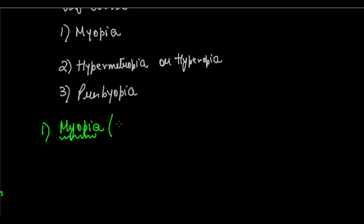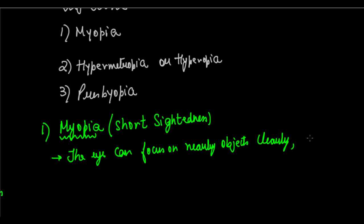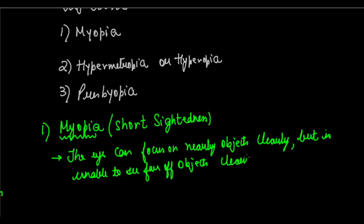Myopia is commonly called short-sightedness. It is an eye defect in which the eye can focus on near or nearby objects clearly but is unable to see far-off objects clearly.